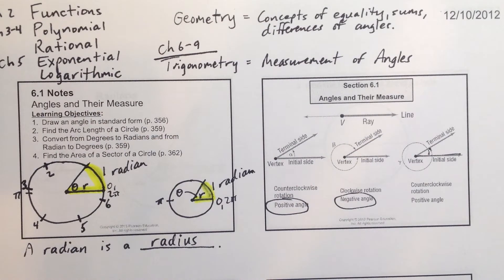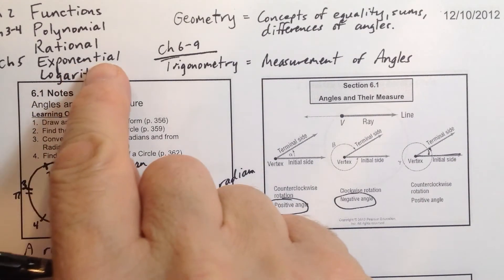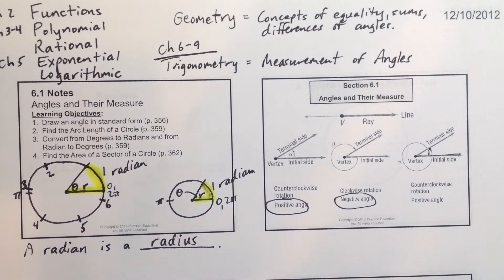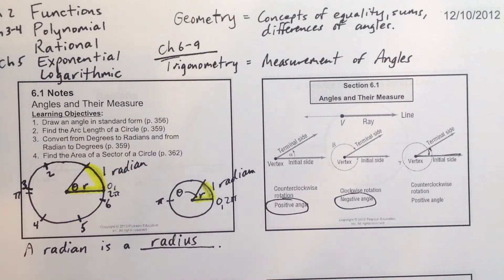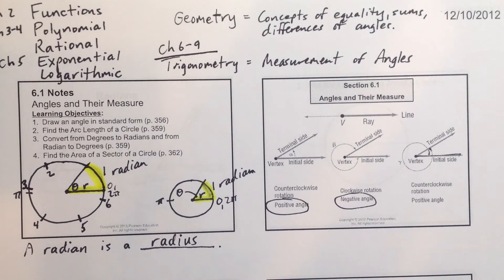Then we talked about specific functions, polynomial and rational. Then chapter 5 we delved into exponential and logarithmic functions. And now we're going to be talking about the measurement of angles as we study trigonometry in the next four chapters.